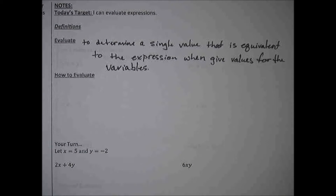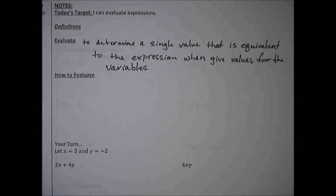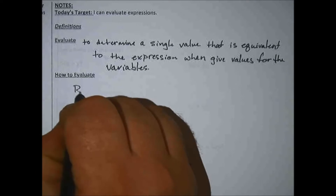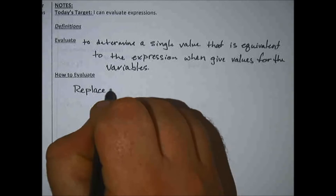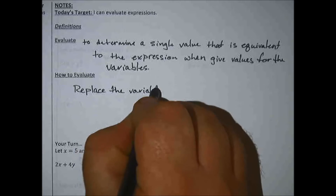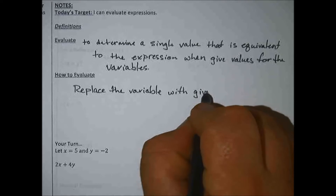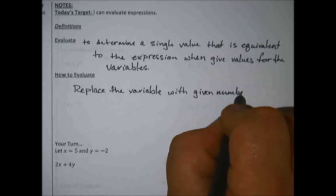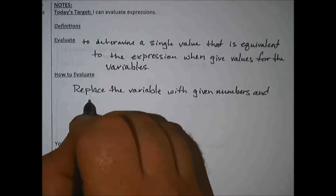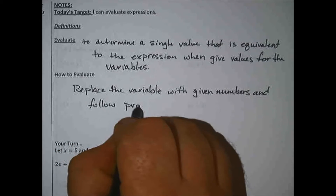You might want to pause and rewrite that so you can get that down. Really what we have is we're just going to be basically simplifying something to its smallest possible value. So we'll have things like x plus 5, and they'll also tell us what x is. How we evaluate is to replace the variable with specific — or given — numbers, and follow the proper order of operations.